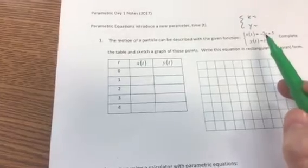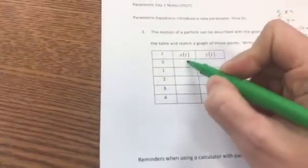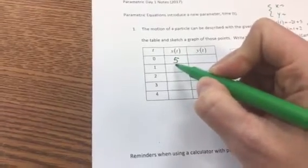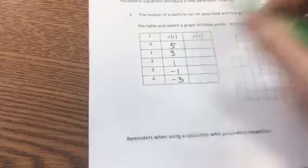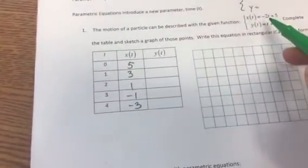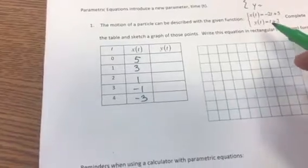So at time 0, when I plug in 0 here, negative 2 times 0 is 0, plus 5 is 5. And then I have a slope of negative 2, so that's 3, that's 1, that's negative 1, that's negative 3. Let me make sure I'm right here. Plug in 4, negative 8 plus 5 is negative 3. My using slope worked.